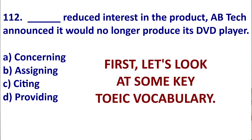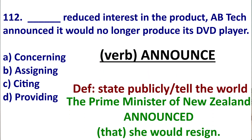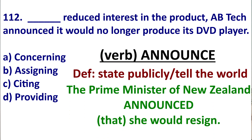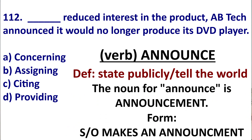Let's go over some key TOEIC vocabulary in the TOEIC sentence. The first is a word you probably know, which is 'announce.' This means to state publicly, to tell the world. For example, recently the Prime Minister of New Zealand announced that she would resign — she told the country, she had a press conference. The noun for announce is 'announcement,' and the common form is someone makes an announcement.